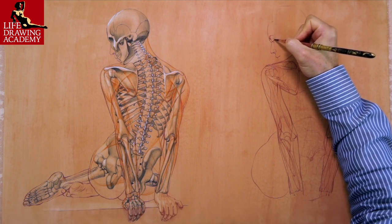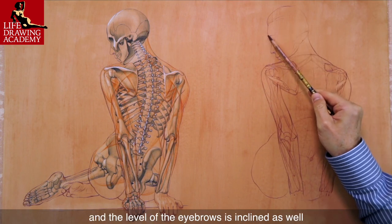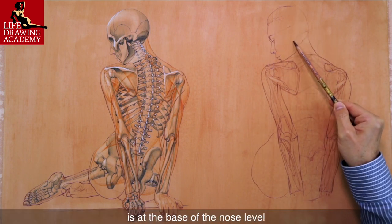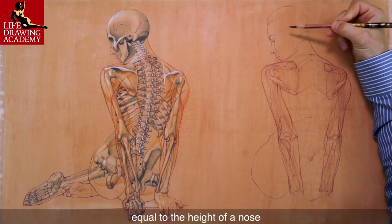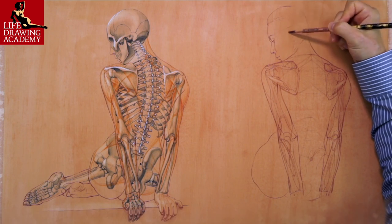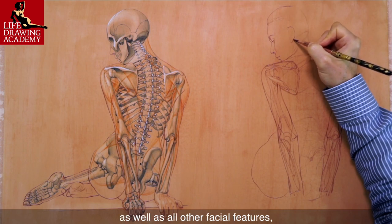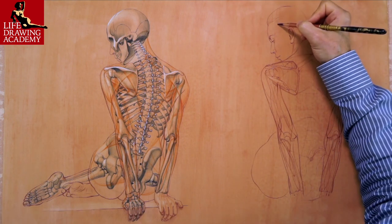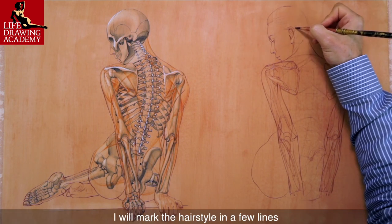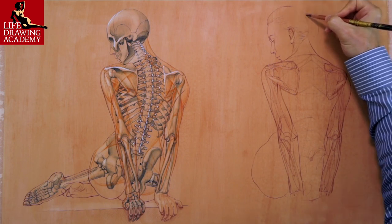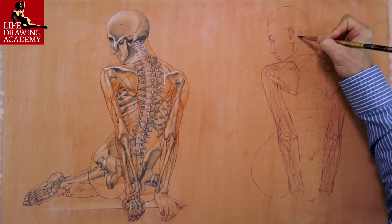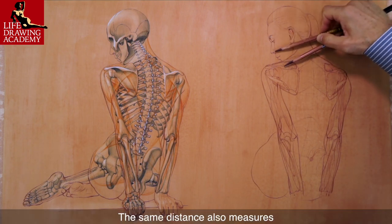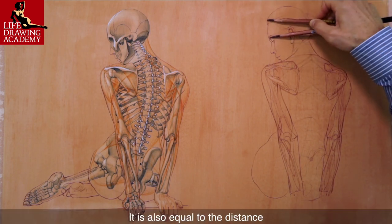Let's continue with the portrait. The head is tilted forward, and the level of the eyebrows is inclined as well. This level locates the top edge of the ear. The bottom edge of the ear is at the base of the nose level, so the height of an ear is approximately equal to the height of a nose. We can double-check the nose-to-ear proportion. The same distance also measures from the base of the nose to the chin, and is also equal to the distance from the eyebrows to the hairline.